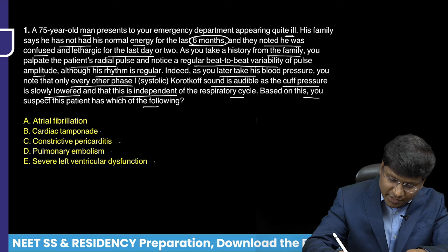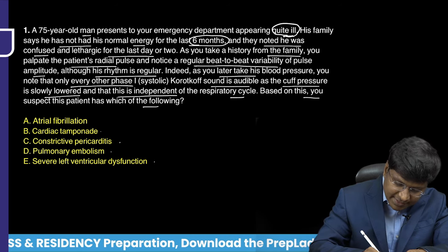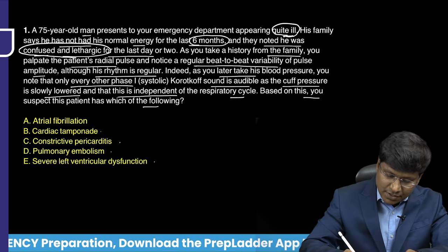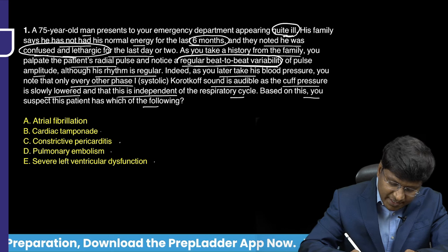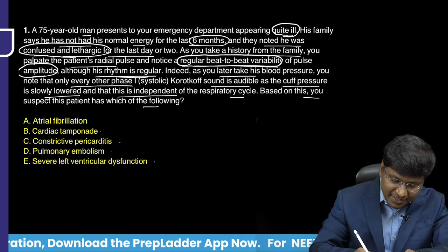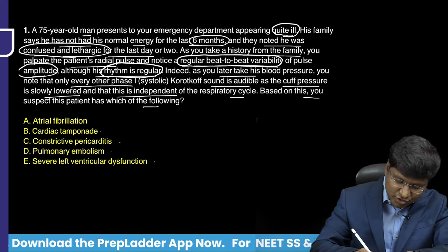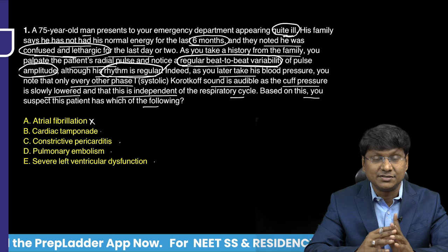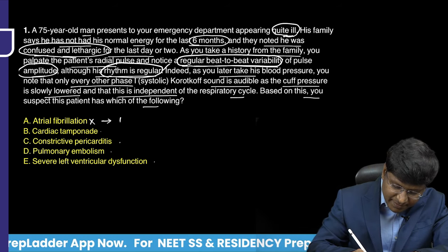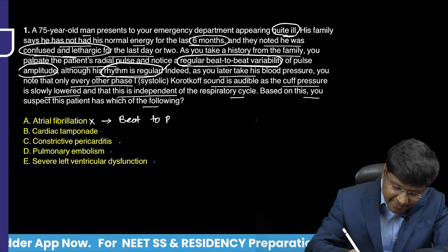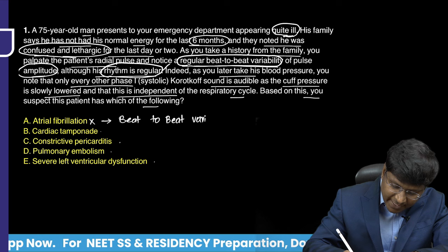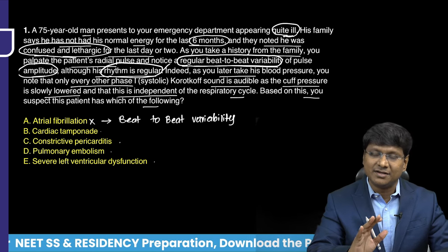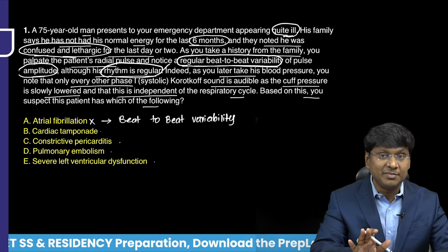Key history: the patient is quite ill, confused, and lethargic for the last day or two. On palpation: regular beat-to-beat variability of pulse amplitude with a regular rhythm. The first option, atrial fibrillation, is already ruled out because the rhythm is regular. In atrial fibrillation, beat-to-beat variability can occur, but the rhythm is irregularly irregular, which is against the findings described here.